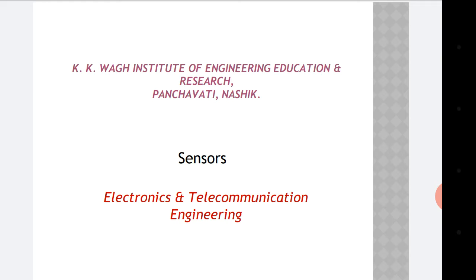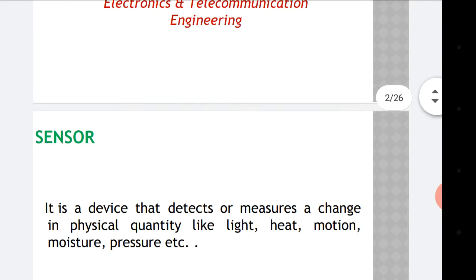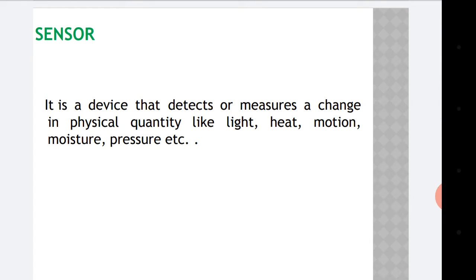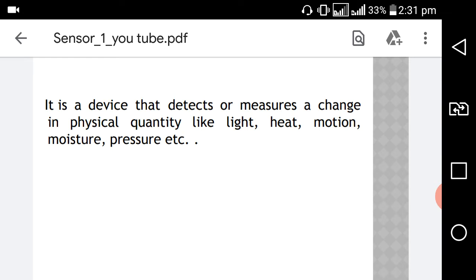What is a sensor? A sensor is a device that converts a measurement into an electrical equivalent of that signal. It is a device that detects or measures a change in a physical quantity like light, heat, motion, moisture, pressure etc. A transducer or a sensor is a device which is capable of converting the physical quantity into its proportional electrical quantity such as voltage or current.